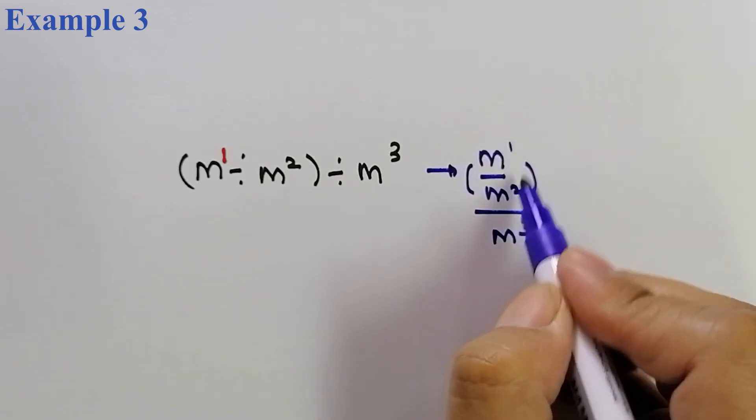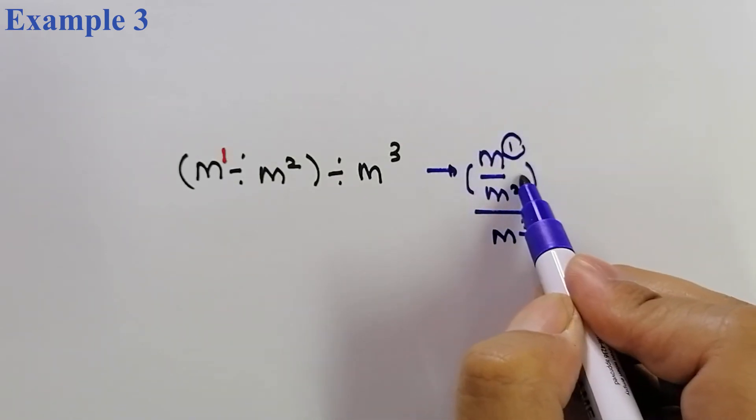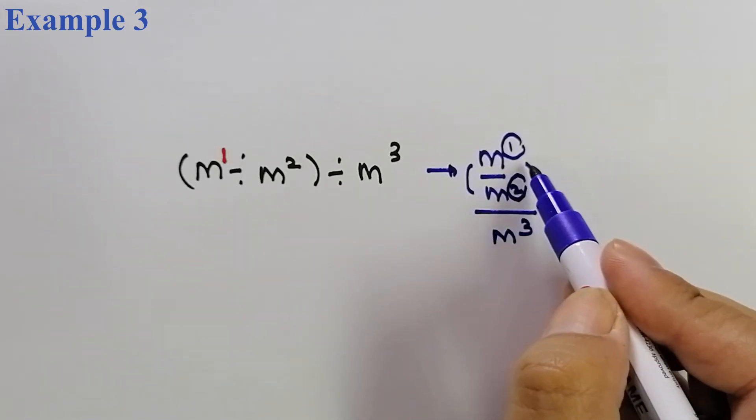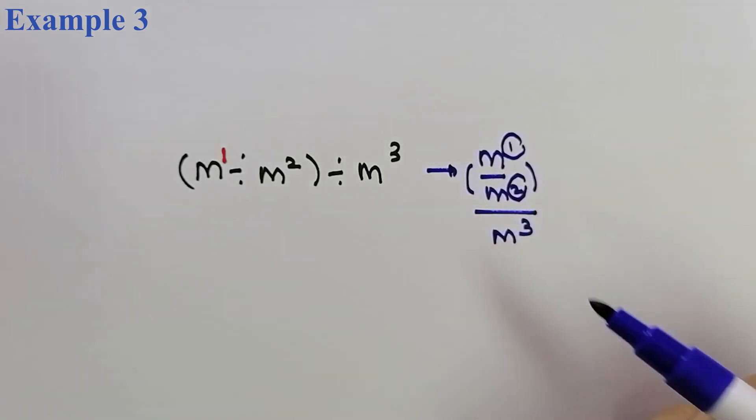So, M power of 1 divided by M power of 2. So, apa yang akan kita lakukan ni? Kita akan substract dia punya power. So, kemudian, barulah kita letuskan dengan operasi yang seterusnya. Substractkan dengan 3. So, kita akan buat satu-satu untuk bersamaan yang ini.